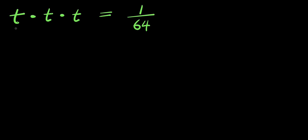Hello. How to solve t times t times t equals 1 over 64. We are solving for all values of t that will satisfy this equation. So t times t is t to the power of 2, times t — this is t to the power of 3.